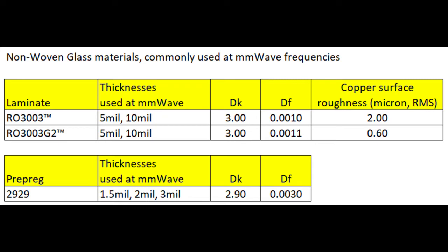The bottom table shows prepreg — specifically the 2929 bond ply — available in thicknesses of 1.5 mil, 2 mil, and 3 mil. DK is 2.9 and DF is 0.003, so the DK is pretty closely matched to the laminates, though the DF is a little higher, which can come into play depending on the circuit design. All the materials on this slide are unsupported — they have no glass fabric — meaning you will not have a glass weave effect at all.